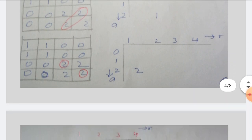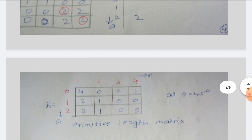Combining these results, we get the primitive length matrix B of size 3 rows (A) by 4 columns (R): the values are [4, 0, 0, 1; 2, 1, 0, 0; 2, 1, 0, 0].